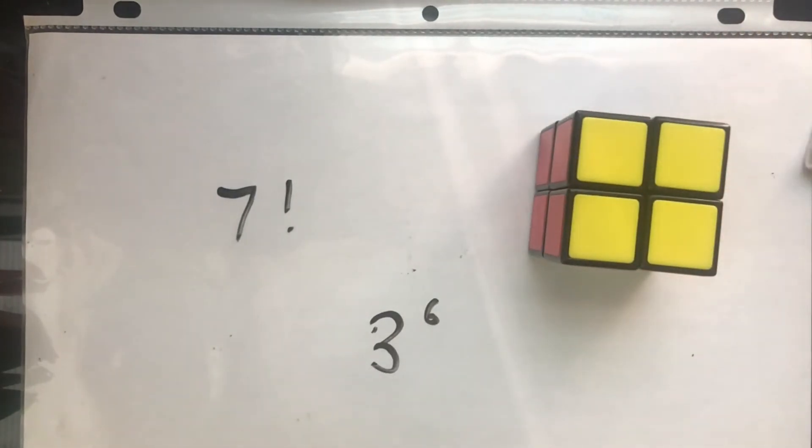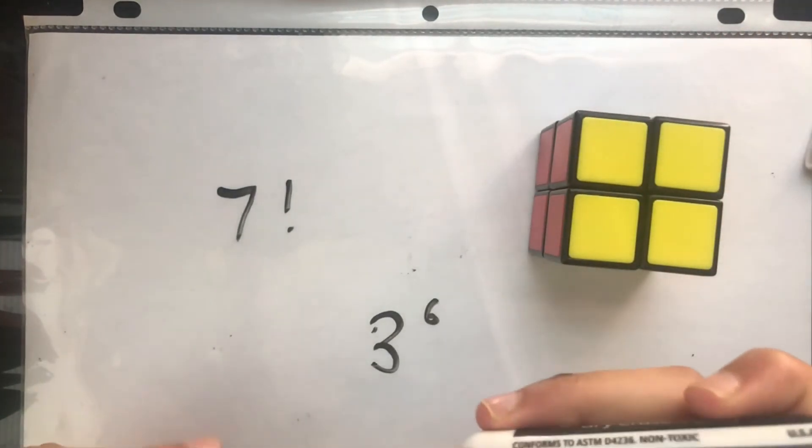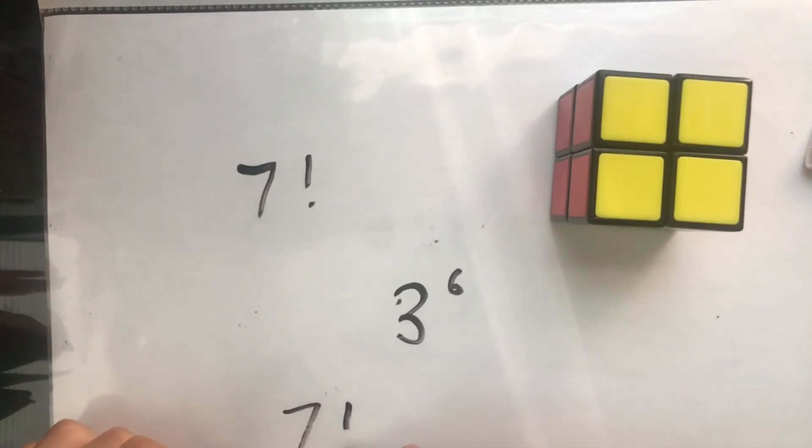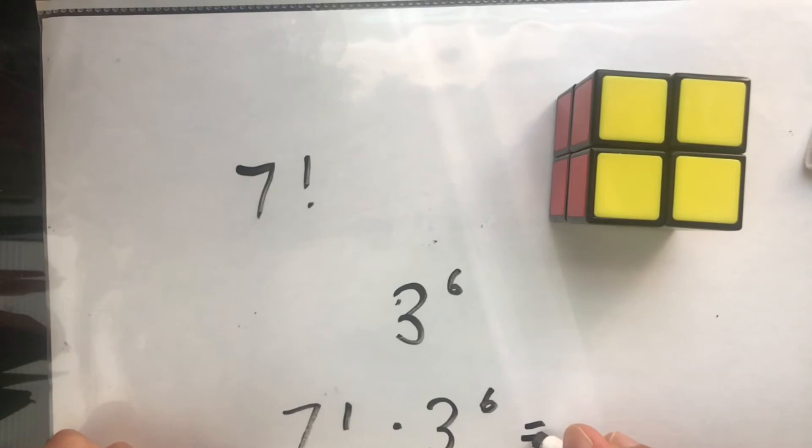And we have 7 factorial total permutations. So simply we can write 7 factorial times 3 to the power of 6. And this will be how many permutations there will be total for the 2 by 2 cube.